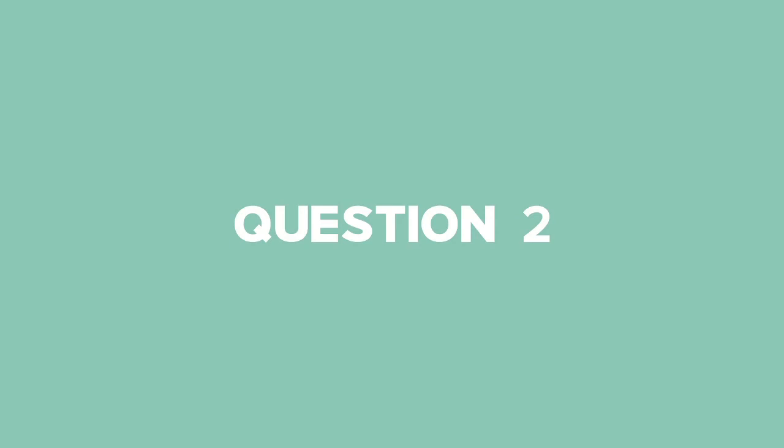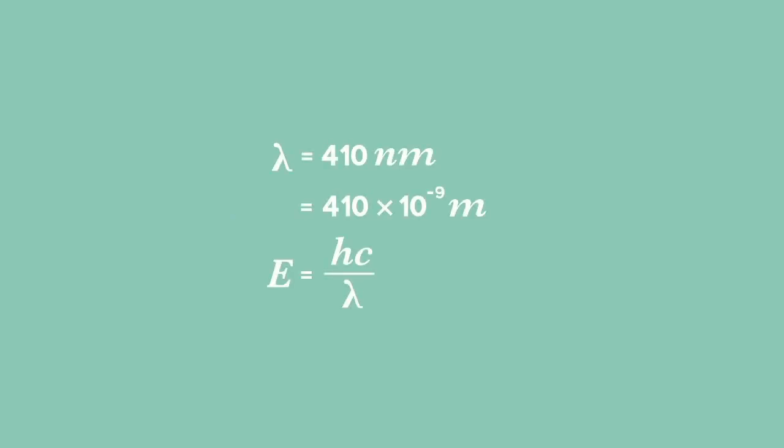Question 2: What about the energy of a photon of violet light with a wavelength of 410 nanometers, or 410 times 10 to the power of negative 9 meters?